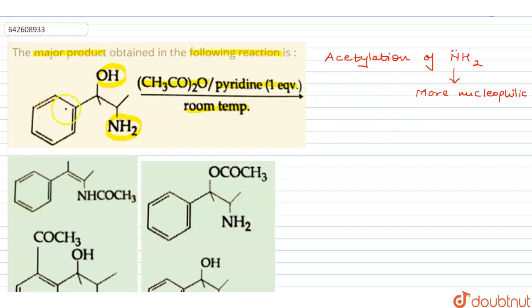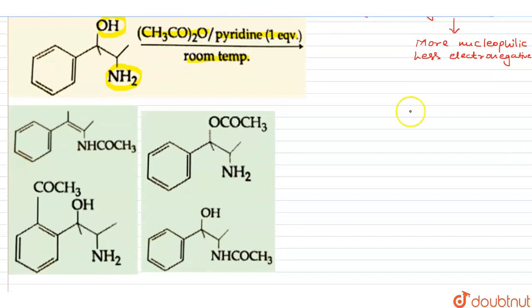In fact, this could have been an electrophilic substitution otherwise, but here we have a more nucleophilic site, that's your NH2 group, due to its less electronegativity. And hence what we would be getting is the acetylation of the NH2 group.